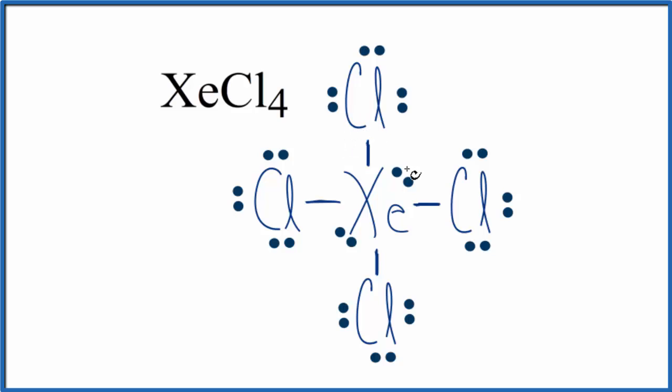A few things that are kind of strange here. Xenon has 2, 4, 6, 8, 10, 12 valence electrons. It exceeds the octet. That's okay, xenon can have an expanded octet.